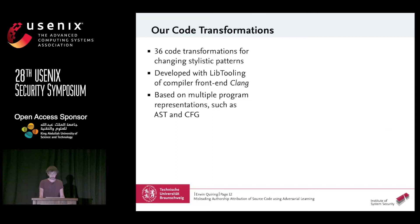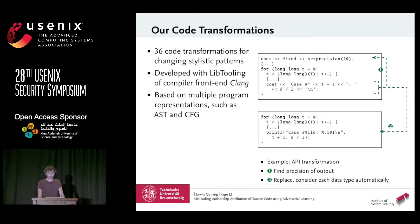Here we see an API transformation to replace cout by printf. We use the control flow graph first to find out the position of the cout command — relevant when printing floating point values, where set precision defines how many values we print. Then in the second step, we use the AST to find out the final data type of each entry in the cout command to create the necessary printf string.